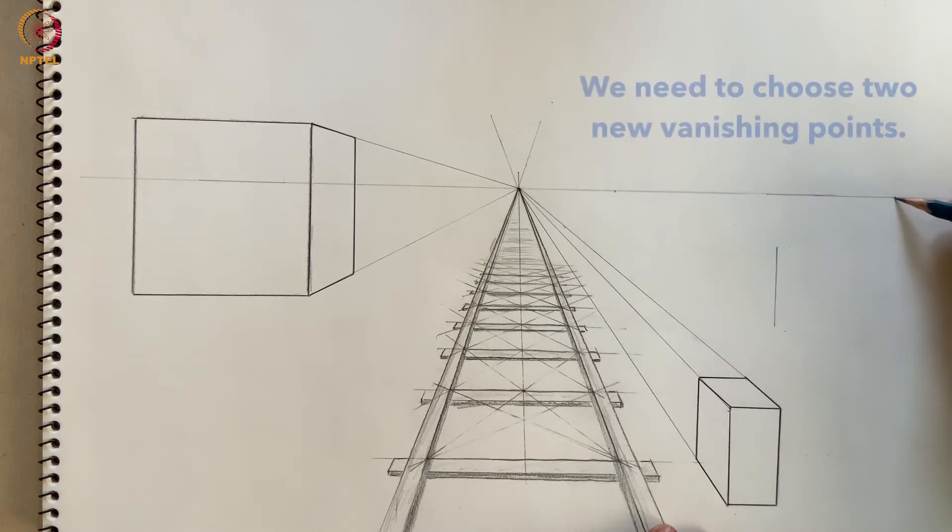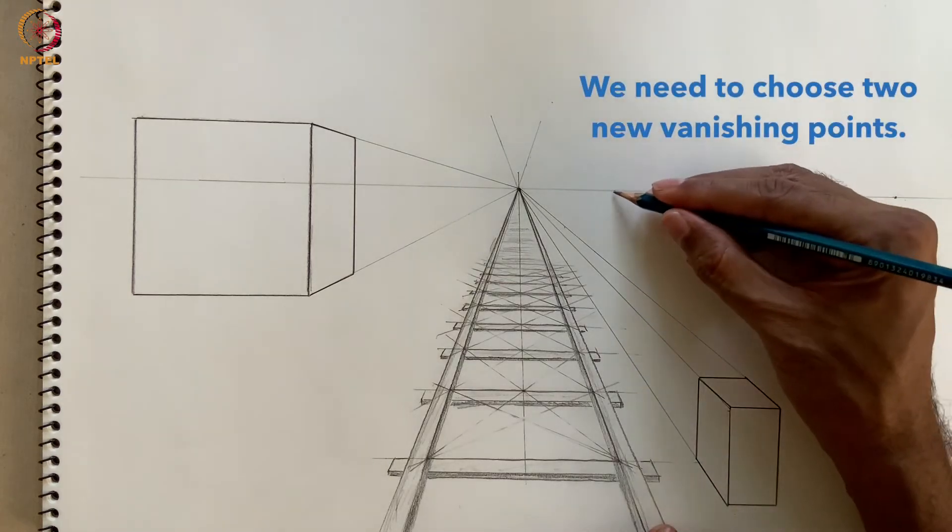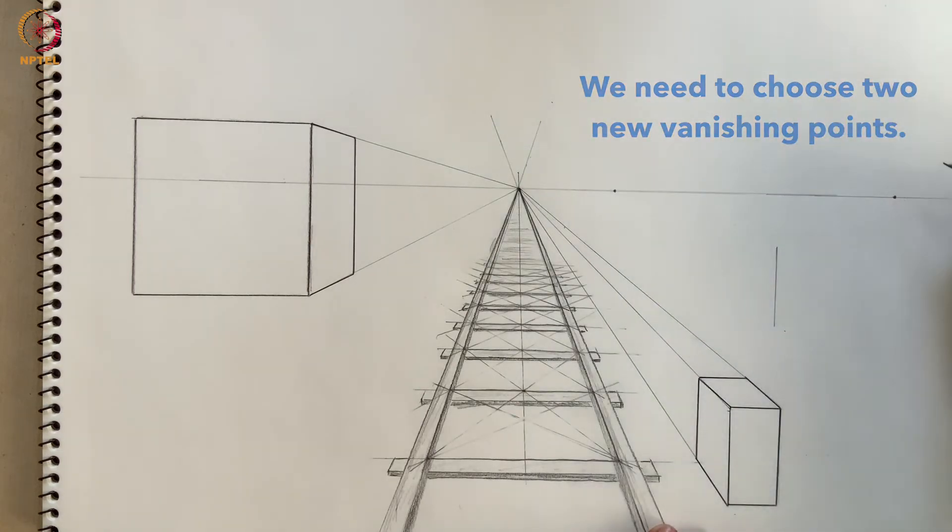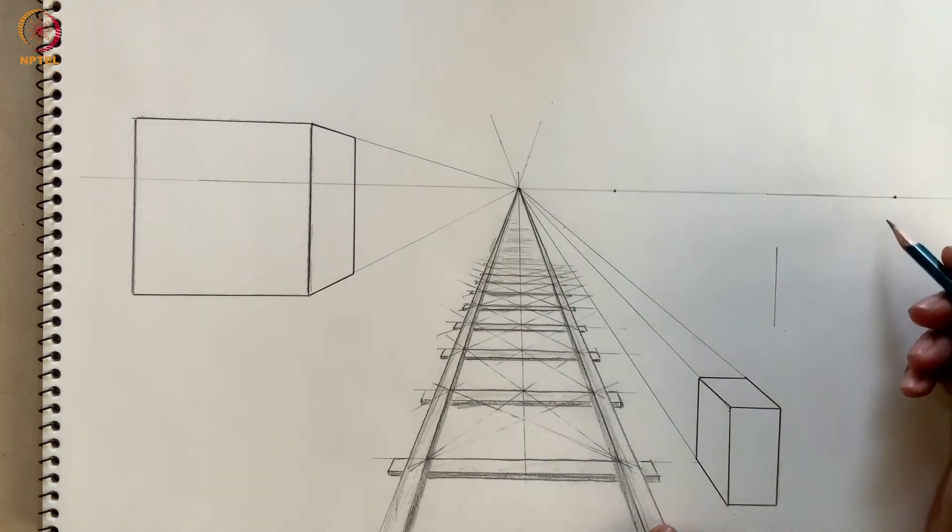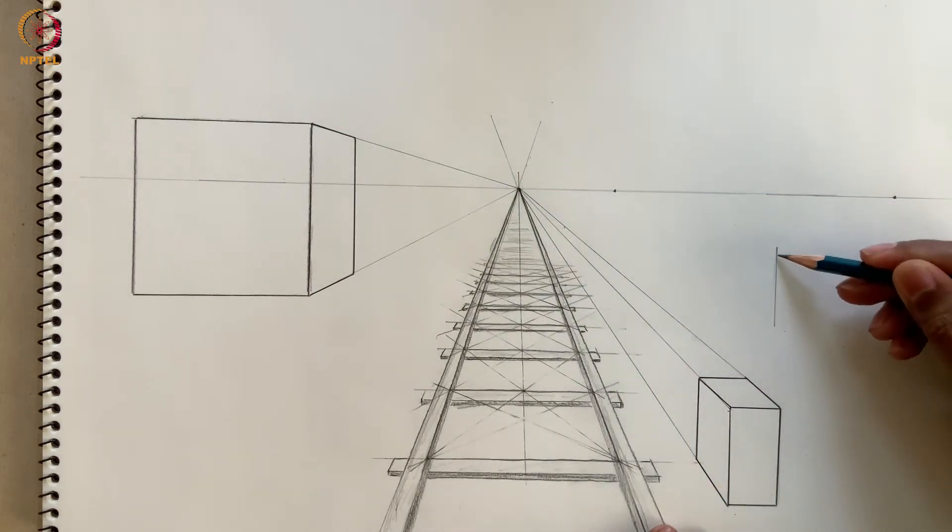We need to choose two new vanishing points to which the outgoing edges of our box can converge. Let's connect the two corners of this front edge to the two vanishing points.